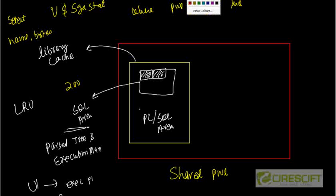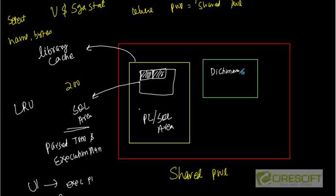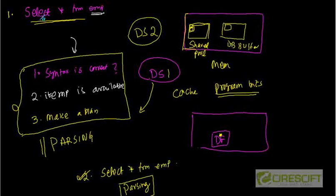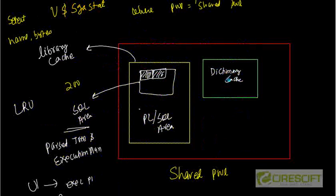The next area is called the dictionary cache. When you execute 'SELECT * FROM EMP', the server needs to verify that the employee table exists. The first time it checks the database; once it knows the table is there, it stores that information in the dictionary cache. The dictionary cache stores data dictionary objects currently in use — for example, when you query the DEPARTMENT table, its constraint information, column names, null values, and so on are cached here. This area is limited and managed by the LRU algorithm.